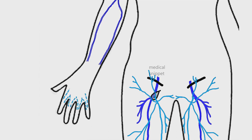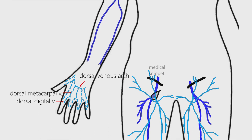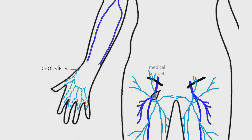On the dorsum of the hand, the dorsal digital veins form dorsal metacarpal veins, which drain into the dorsal venous arch. The lateral end of the dorsal venous arch continues as the cephalic vein, and the medial end of the dorsal venous arch continues as the basilic vein.